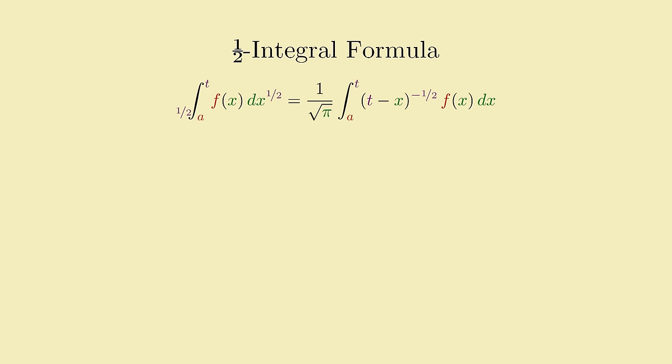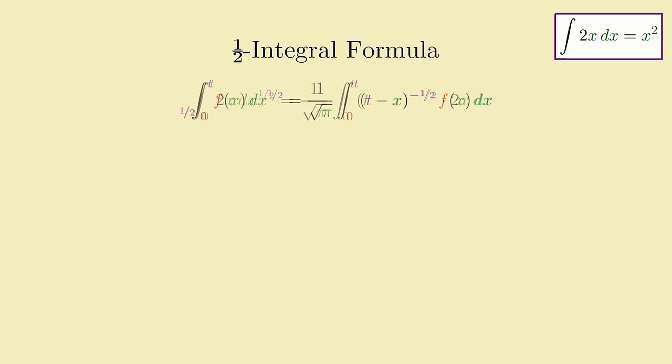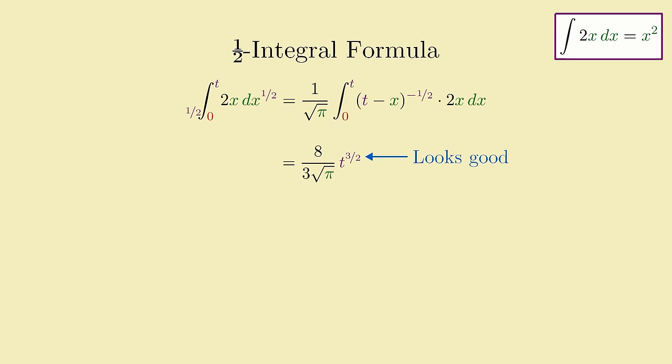Let's test it on the function f of x equals 2x, whose regular single integral we know is x squared. And just to keep things simple, we'll use zero as the lower integration limit in the formula. Plugging f of x equals 2x into the formula and computing it, we get 8 over 3 times the square root of pi times t to the 3 over 2. This is encouraging so far, since we got 3 over 2 as our power of t, which is halfway between the powers of t and t squared.